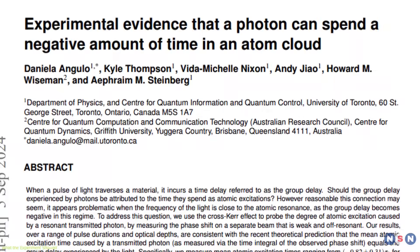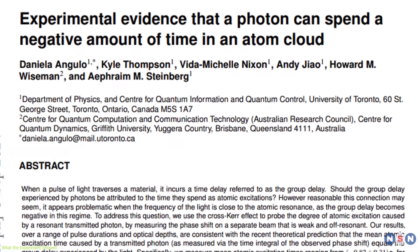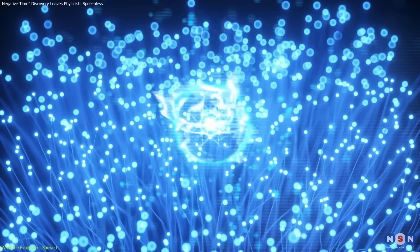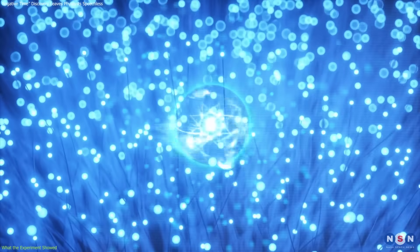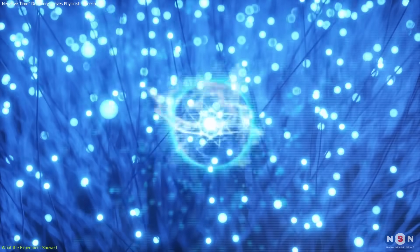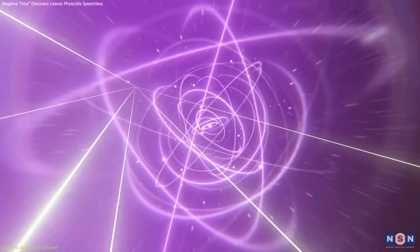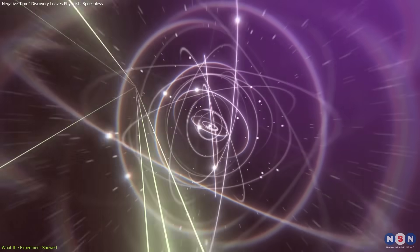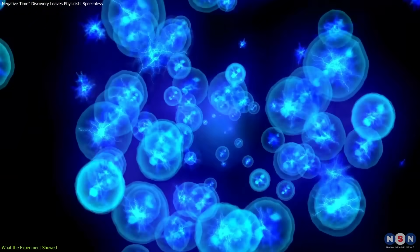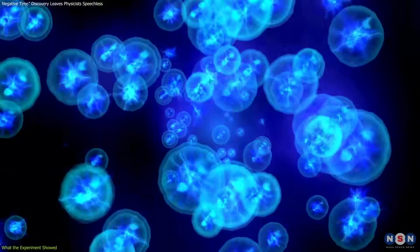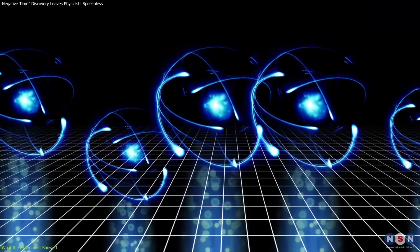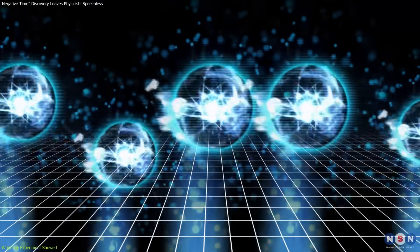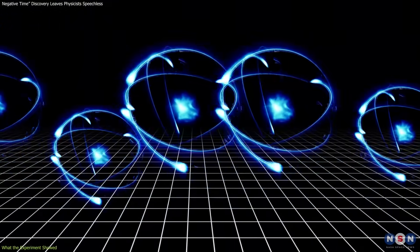The experiment, led by Afram Steinberg and Daniela Angulo, was designed to measure how long atoms remain in an excited state after absorbing and then re-emitting photons. Using ultra-cold rubidium atoms and carefully shaped laser pulses, the researchers examined the subtle dynamics of photon-atom interactions. In standard conditions, the delay between absorption and emission follows a predictable time scale.